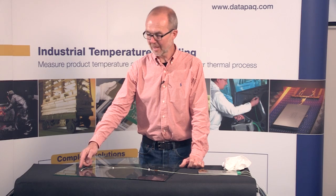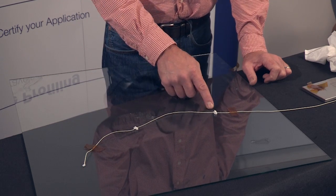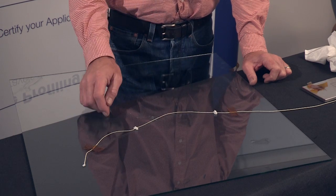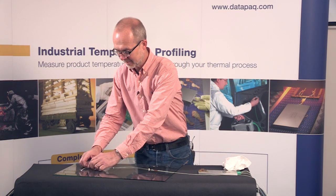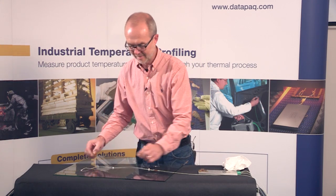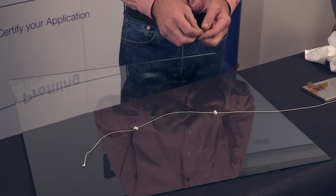Having cured the adhesive at the tip, place the adhesive at strategic points along the thermocouple to hold it in place during the profiling process. Once these have been cured, the tape can be removed and the sample is ready to be passed through the process.